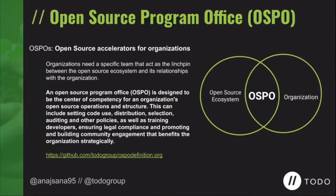But what is exactly an OSPO? Open source program offices have been proven by multiple organizations to be the designated center of competency for an organization's open source operations and structure. This can include setting code use, distribution, selection, auditing, and other policies, as well as training developers, ensuring legal compliance, and promoting and building community engagement that benefits the organization in a strategic way. We can also define it as the linchpin between the open source ecosystem and the organization.